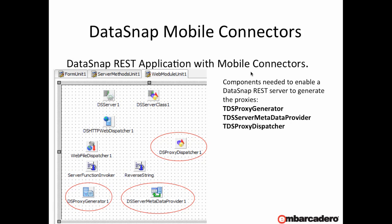All the magic happens because of a new component — a DS Proxy Dispatcher — which is added to your web module unit. This hooks up to the DS Proxy Generator and the DS Server Metadata Provider. This chain allows the proxy generator, that's producing all the rich information currently being used by Delphi and C++ Builder to generate remote server classes, to generate proxy classes that are specifically bound up for the language they're pushing out for.